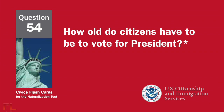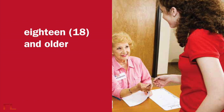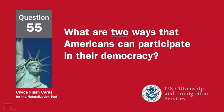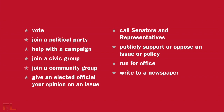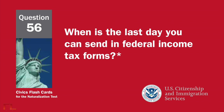How old do citizens have to be to vote for president? Eighteen and older. What are two ways that Americans can participate in their democracy? Vote, join a political party, help with a campaign, join a civic group, join a community group, give an elected official your opinion on an issue, call senators and representatives, publicly support or oppose an issue or policy, run for office, or write to a newspaper.